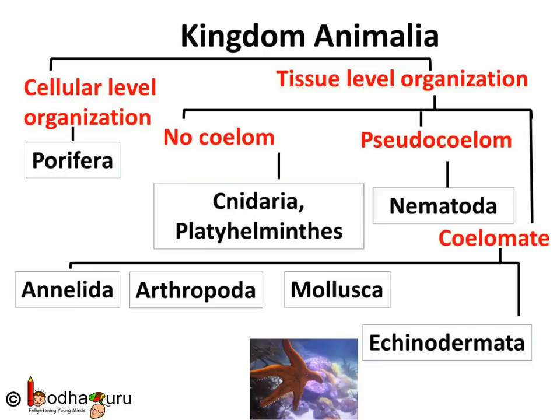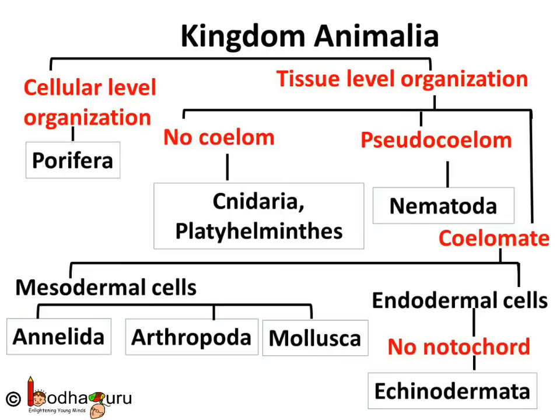Echinodermata phylum — animals in this phylum have spines on the skin, for example starfish. Now if you see Annelids, Arthropods, Molluscs and even Echinoderms, all these are triploblastic and have a coelom. But in the case of Annelids, Arthropods and Molluscs, the coelom is formed from mesodermal cells. Whereas in the case of Echinoderms, the coelom is formed from pouches pinched off from the endoderm and there is no notochord present in Echinoderms.